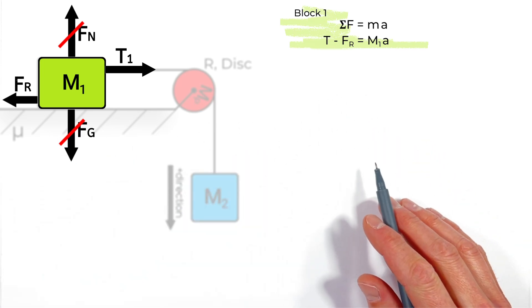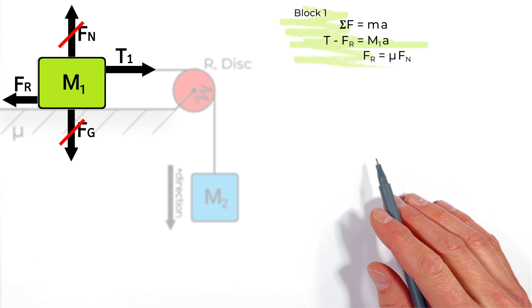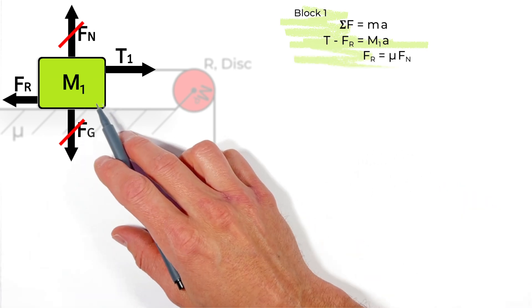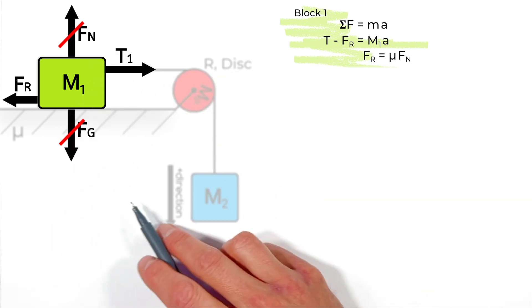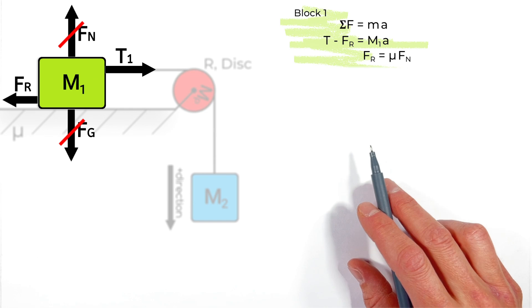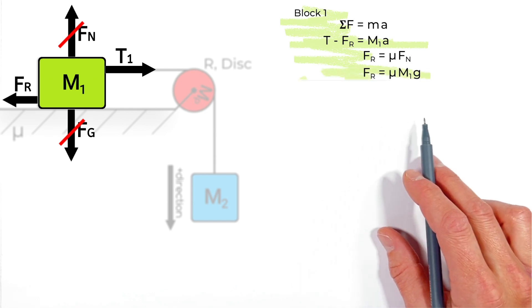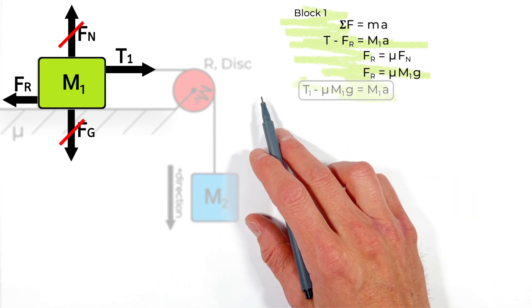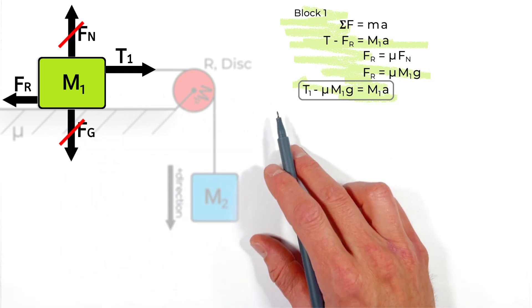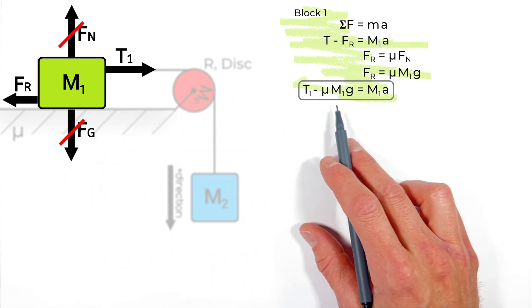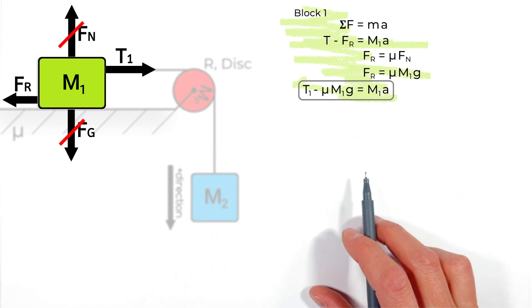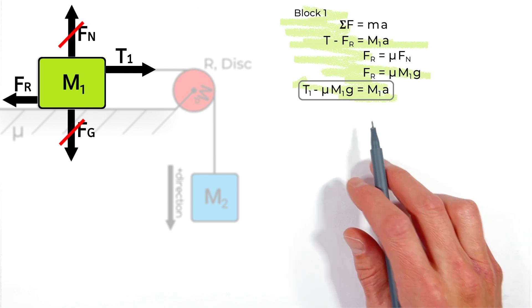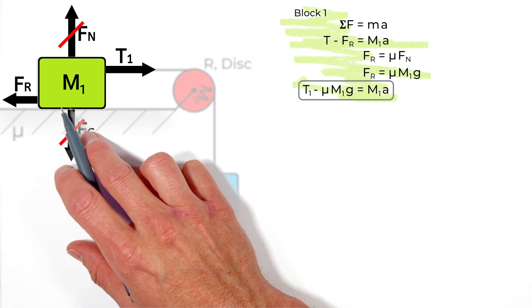Friction is given by the coefficient of friction multiplied by the normal force. Since gravity and the normal force are equal in magnitude, the friction force equals mu times M1 times G. Substituting that in, we get: T minus mu·M1·G equals M1·A. The issue is we have two unknowns — the tension in the string and the acceleration — so we can't solve for acceleration quite yet.